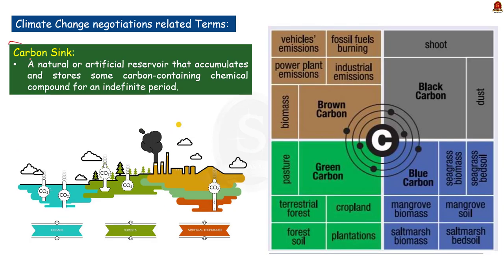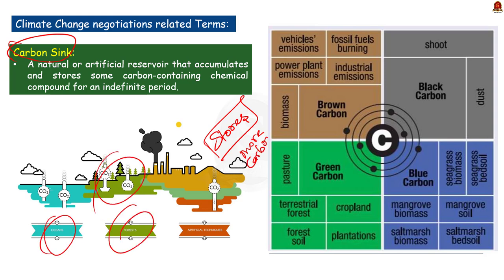A carbon sink is a natural or artificial reservoir that accumulates and stores carbon-containing compounds for an indefinite period. A carbon sink is anything that absorbs more carbon than it releases — examples include forests, soil, ocean, and the atmosphere. You must also know about blue carbon, which was asked in the 2021 prelims. Blue carbon refers to coastal, aquatic, and marine carbon sinks held by aquatic vegetation, marine organisms, and sediments. Green carbon refers to carbon removed by photosynthesis and stored in plants and soil of natural ecosystems. Black carbon is a component of fine particulate matter of size 2.5 micrometers, originating from the incomplete combustion of fossil fuels, coal, biofuel, biomass, wood, and rubber — emitted in the form of soot.